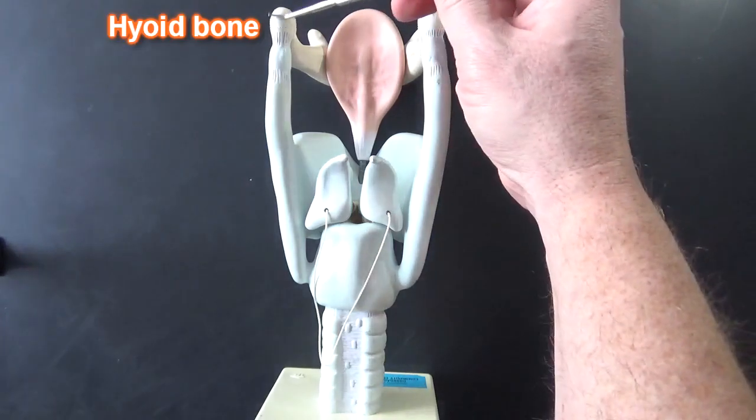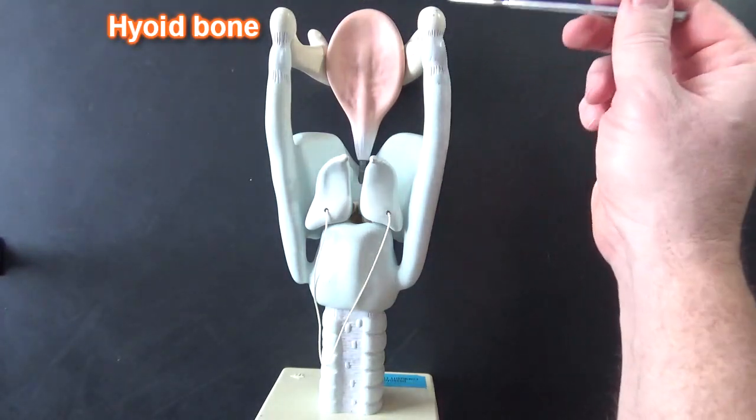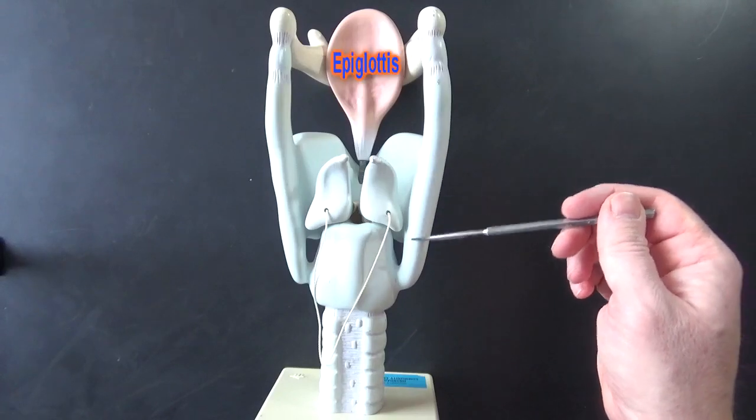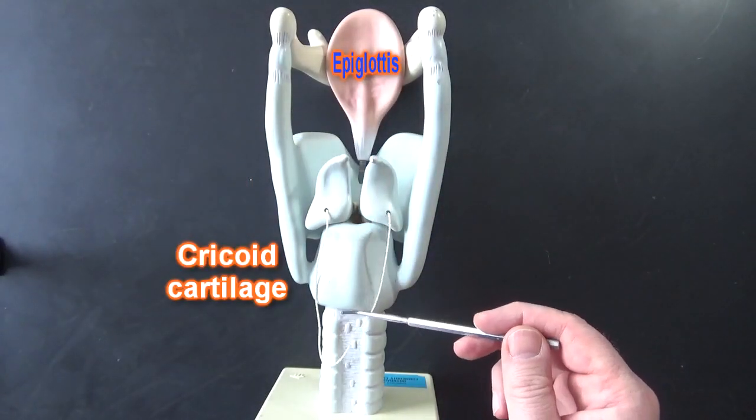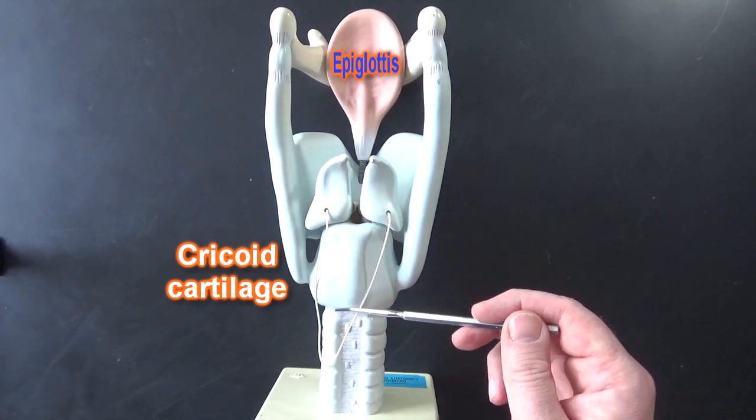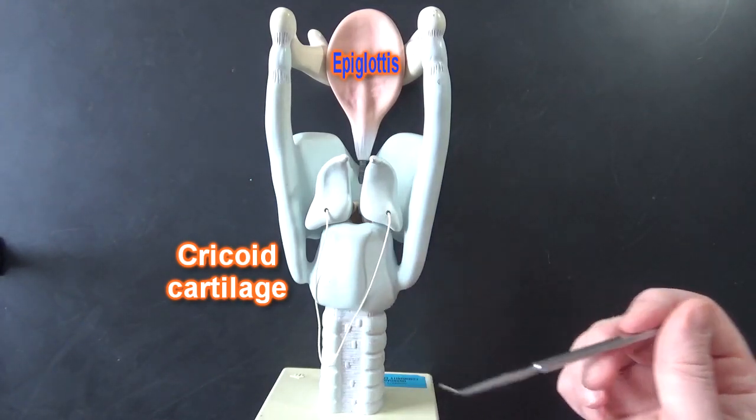Now here we can see the posterior aspect of the hyoid bone. Here we can see thyroid cartilage and cricoid cartilage, and notice the cricoid cartilage is larger on the posterior than it is on the anterior.